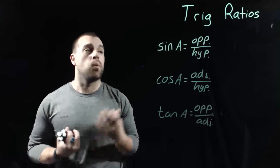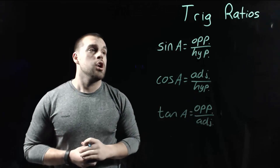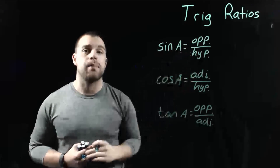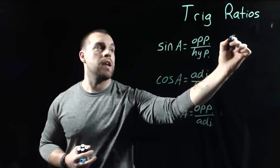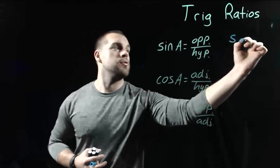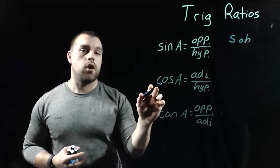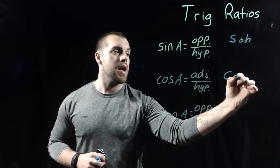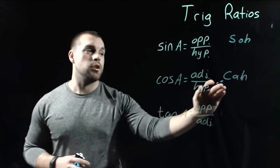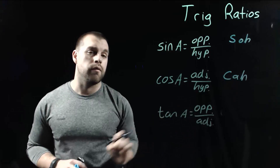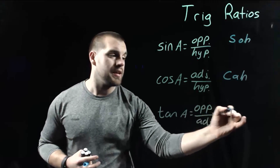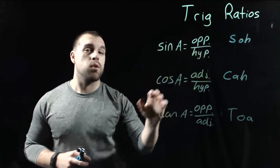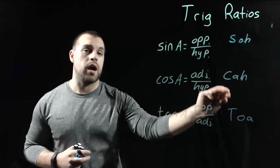It may be a little difficult to remember what sides to use for each trig function, so we use an acronym. For sine, we go opposite over hypotenuse — that's SOH. For cosine, we go adjacent over hypotenuse — that's CAH. And for tangent, we go opposite over adjacent — that's TOA. So the acronym we use to remember our trig ratios is SOHCAHTOA.